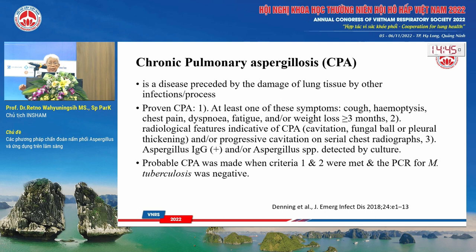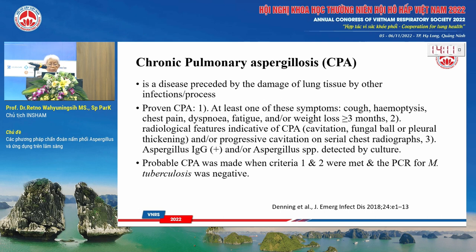Chronic pulmonary aspergillosis (CPA) is a disease preceded by lung tissue damage, often following another infection. My colleague David Denning from Manchester divides it into proven and probable. For proven CPA, the patient must have at least one symptom persisting for three months — cough, hemoptysis, chest pain, dyspnea, fatigue, and/or weight loss — plus radiographic findings and antibody detection.